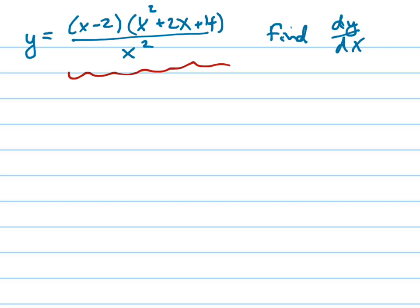The much easier way is to simplify this by multiplying these two out on the top and then distributing the x squared into each term to make it look like a regular polynomial, then you can use the power rule. The reason you can do it here is because you have a single term in the denominator.